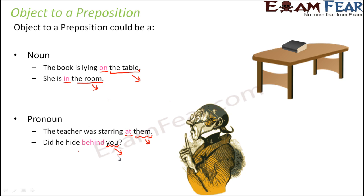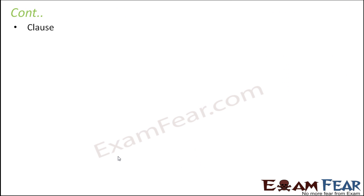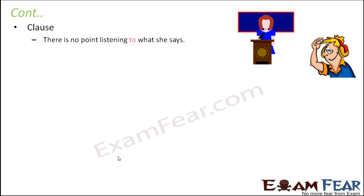In fact, a clause could also be an object. A clause is a group of words that has meaning and also has a subject and a predicate, but it is not a complete sentence — it is just a part of one. For example: 'There is no point listening to what she says.' Here 'to' is the preposition and 'what she says' is a clause acting as the object. Similarly: 'I am sorry for what I did.' Here 'for' is the preposition and 'what I did' is a clause serving as the object.